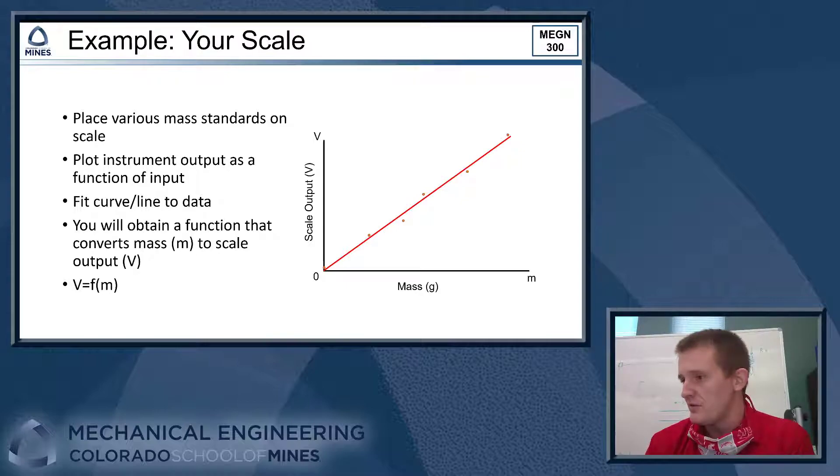Okay, so the way that we're going to go about actually doing this for your scale is we want to get various mass standards. So we have a bunch of these calibrated laboratory weights that you can use. We also have some digital scales that you can weigh whatever items you have around the lab and use those as standards. Also, we just need some sort of well-characterized, we know that this mass weighs this many grams that you can place on your scale and use that as a standard. So what you want to do is find various ones, and we'll plot the instrument's output as a function of input. So in this case, I'm using volts. Some of you guys might have frequency as your scale response. That's okay, you just have frequency on the y-axis instead of volts. And we're going to plot a bunch of points, and we should obtain some sort of function that converts mass to a scale output. Or like volts in this case here. So that's your function that you start off with.